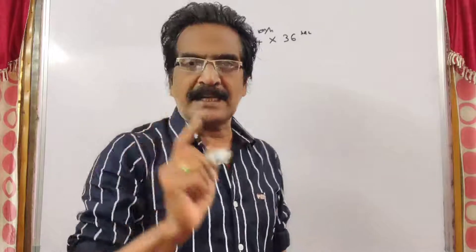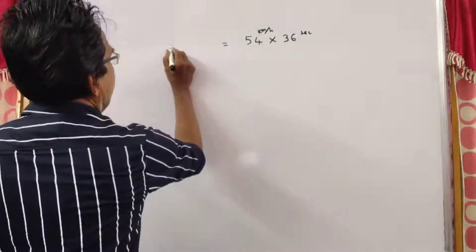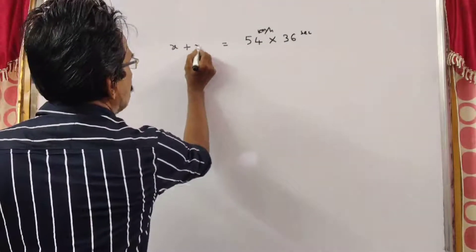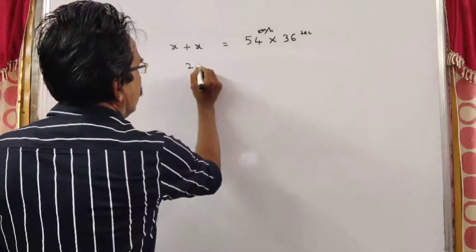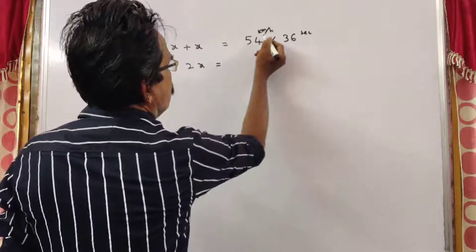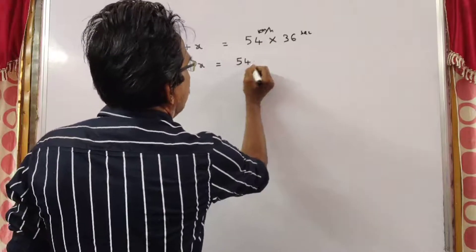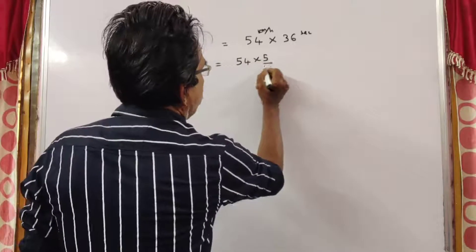Say train length X, then platform length is also X. We get the value of 2X. 2X is equal to... this is given in kmph, so I am converting into meters per second.